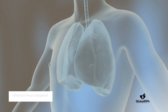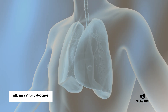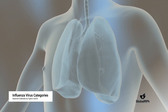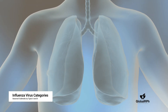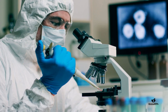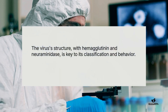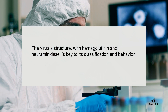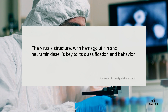Influenza viruses are categorized into four types: A, B, C, and D. Types A and B are primarily responsible for seasonal outbreaks, with subtypes like H1N1 and H3N2 causing notable concern. The virus's structure, featuring hemagglutinin and neuraminidase proteins, plays a crucial role in its classification and behavior, influencing how it spreads and mutates.